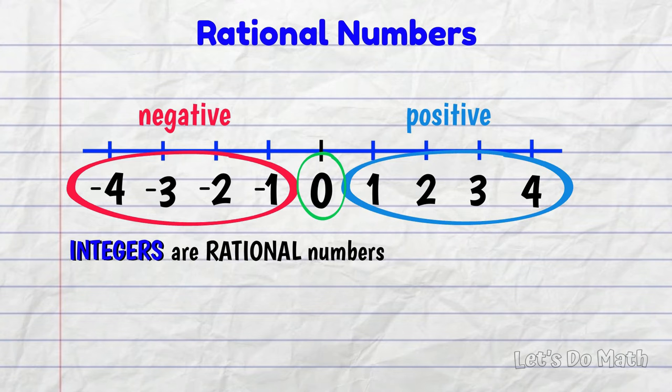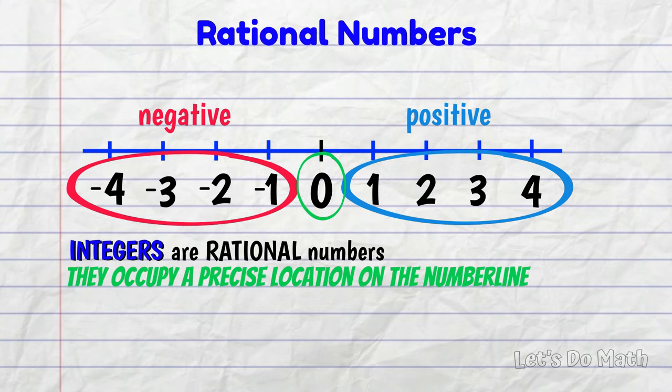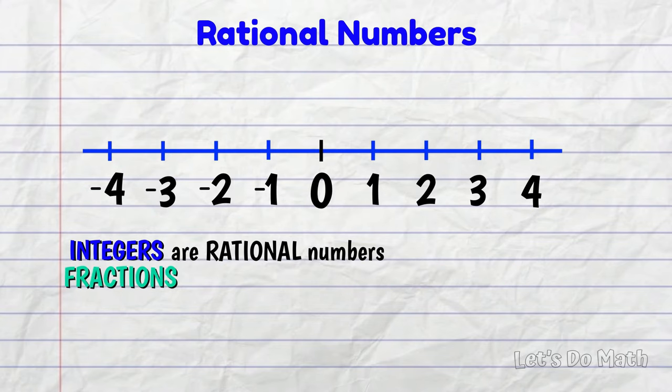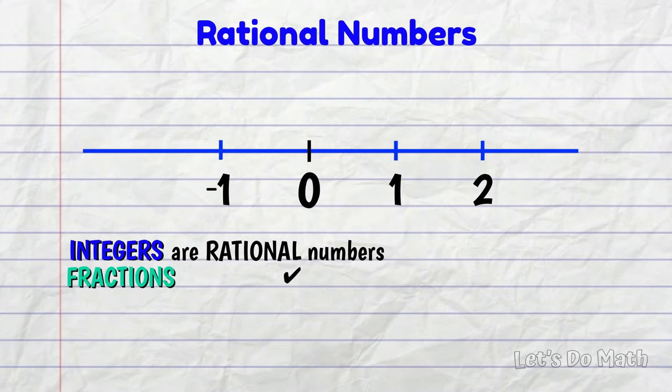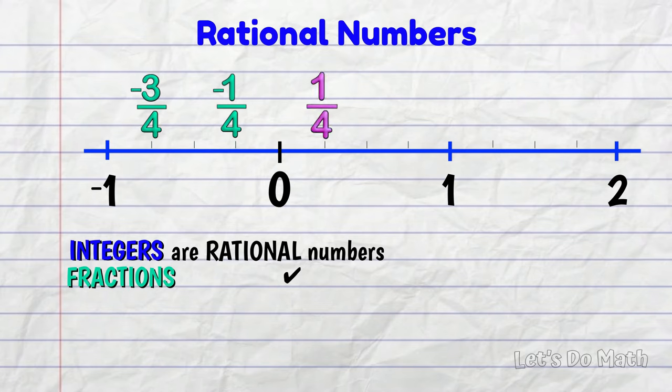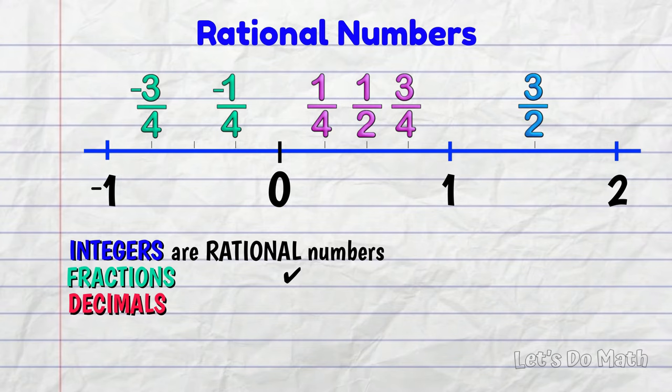Integers are rational numbers. They occupy a precise location on the number line. And we can put fractions on the number line as well - negative fractions, positive fractions, all located on the number line. And a mixed number can be shown as an improper fraction so it fits the definition too. And decimals can be put on a number line as well!